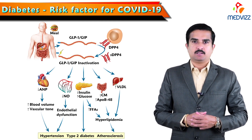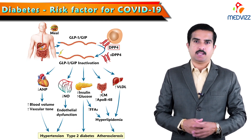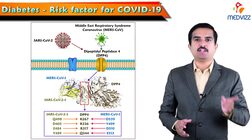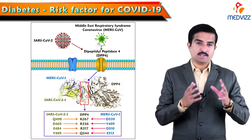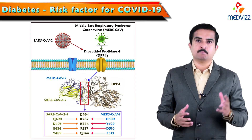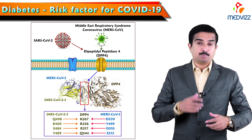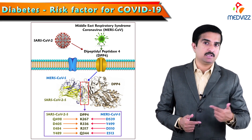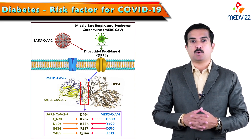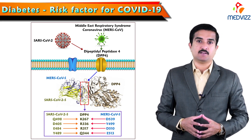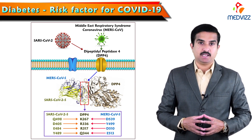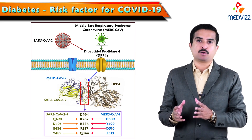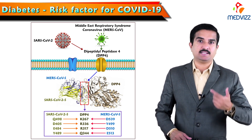DPP4 is a protein that was shown to be a functional receptor for the Middle East respiratory syndrome coronavirus, which is one type of coronavirus called MERS coronavirus. Protein modeling suggests it may play a similar vital role in SARS-CoV-2, the virus responsible for the development of COVID-19.